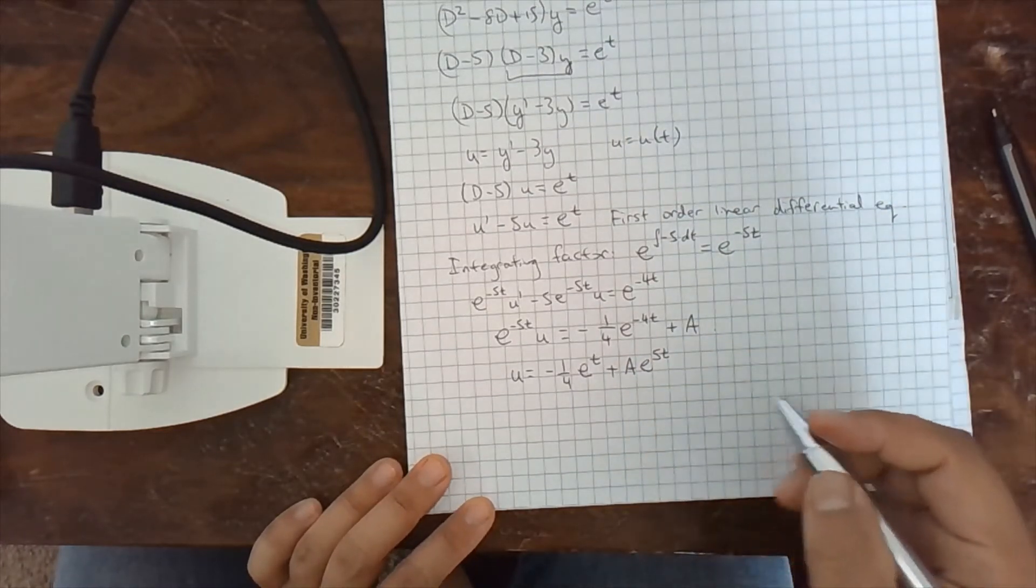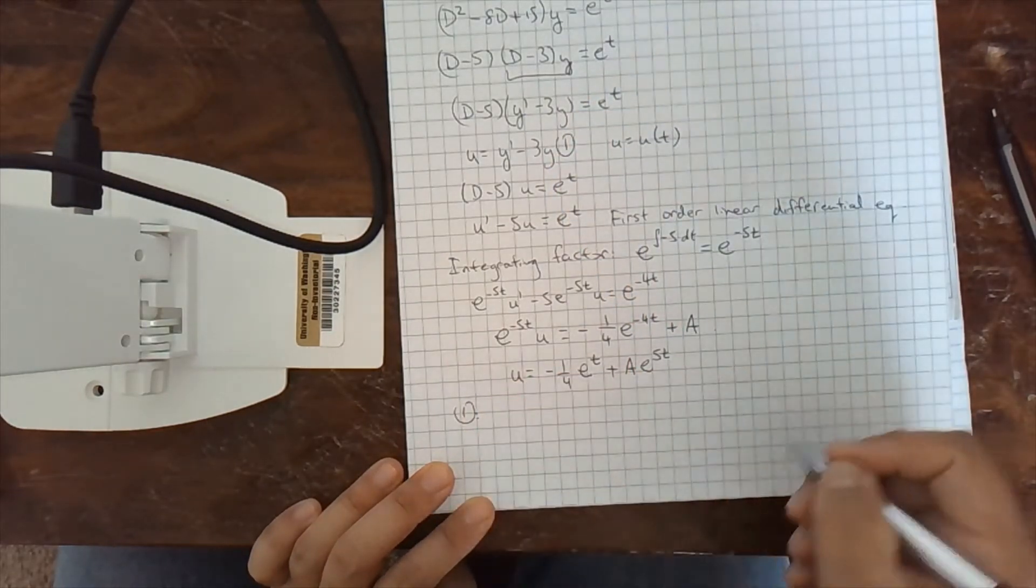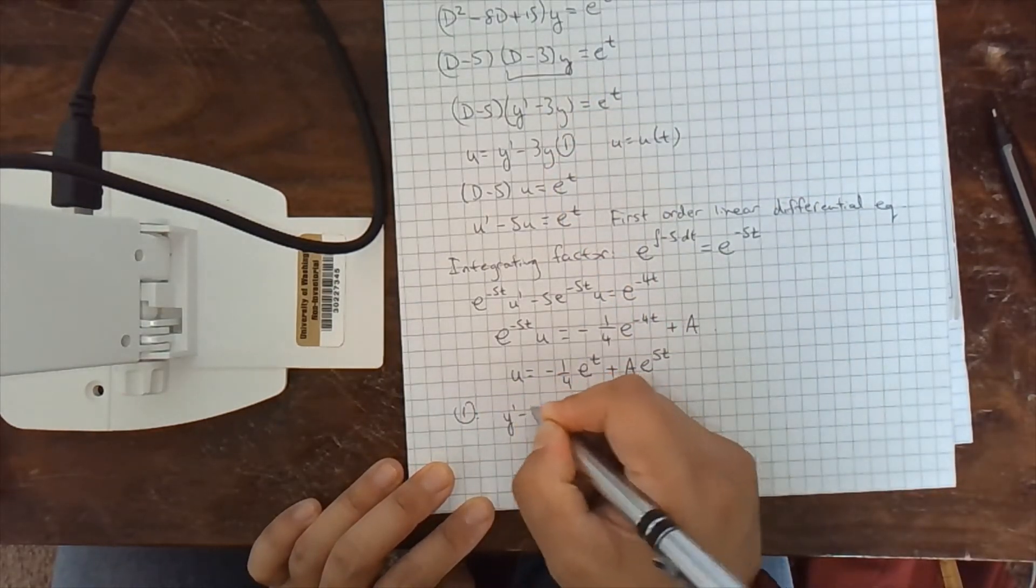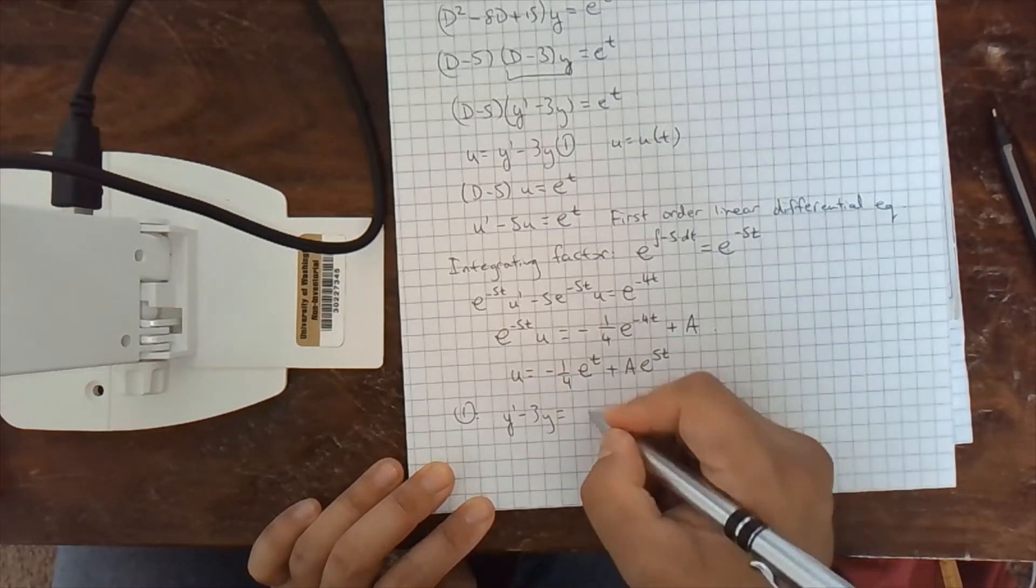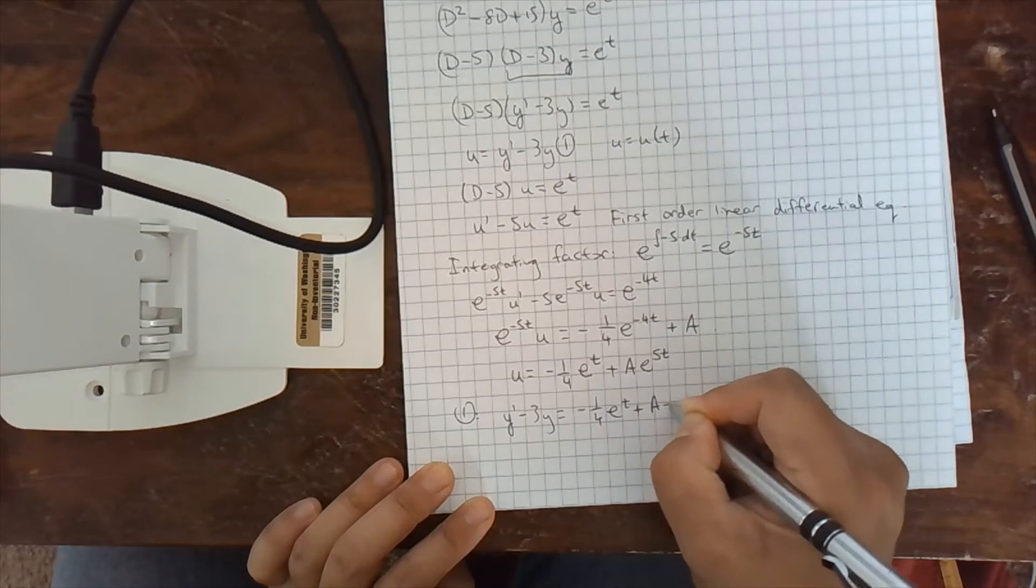Okay, now we go back to up here. We'll call this equation 1. So now y prime minus 3y is this function, minus 1 fourth e to the t plus a e to the 5t.